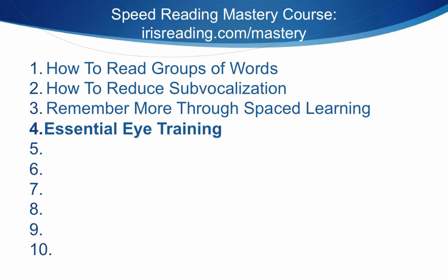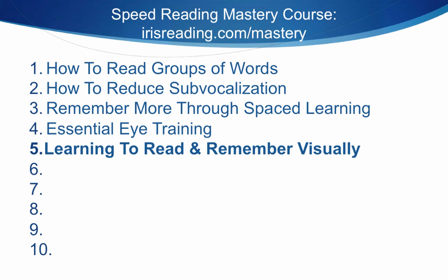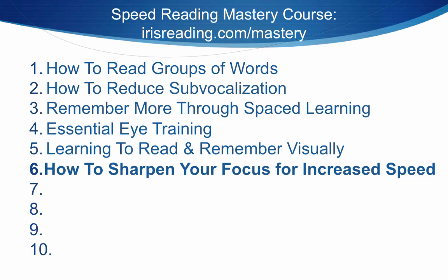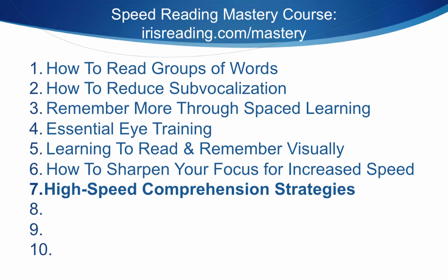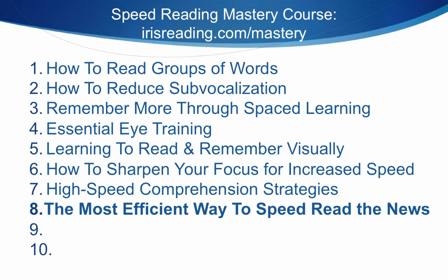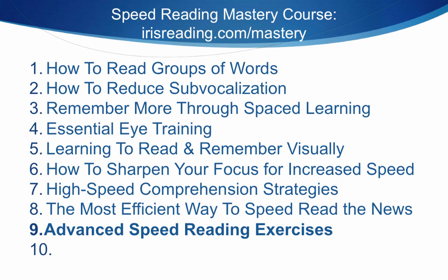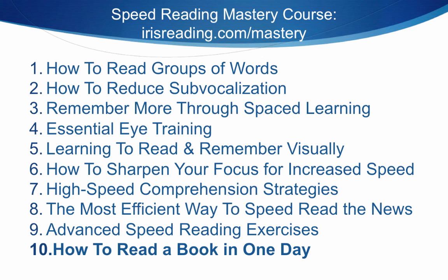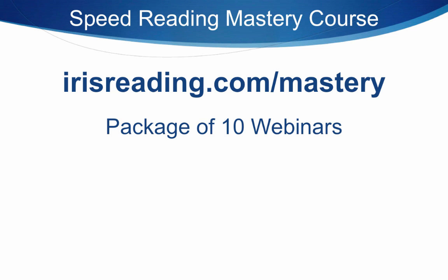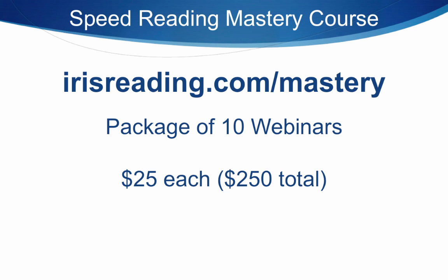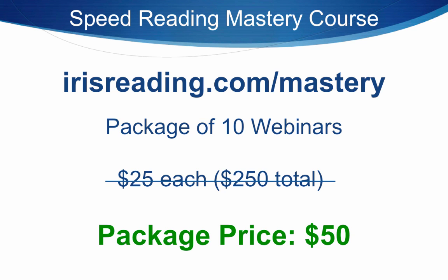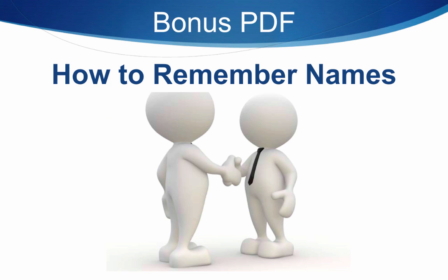The fourth webinar is essential eye training to help you read faster. Five is learning to read and remember visually — if you liked the memory techniques we just covered, this webinar goes into a lot more of those. Six is how to sharpen your focus for increased reading speed. Seven is high-speed comprehension strategies. Eight is the most efficient way to speed read the news. Nine is advanced speed reading exercises. And number ten is how to read a book in one day — definitely our most popular. Each webinar was originally $25, so it's a $250 package, but you can get it for $50 at irisreading.com/mastery. It also includes a bonus PDF on how to remember names.